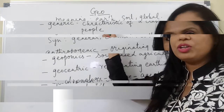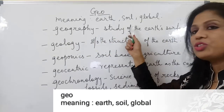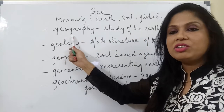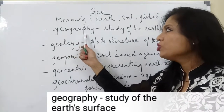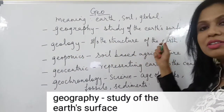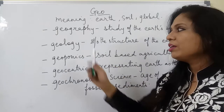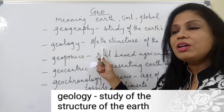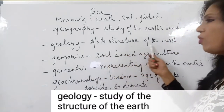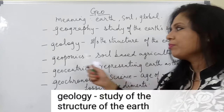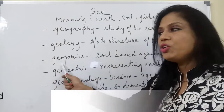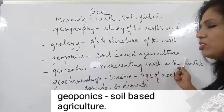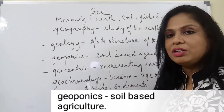The root word 'geo' means earth, soil, or global. The first word is geography, which means the study of the earth's surface. The next word is geology, also a study of the earth, but specifically the structure of the earth. The next word is geoponics, which means soil-based agriculture — again related to the earth.